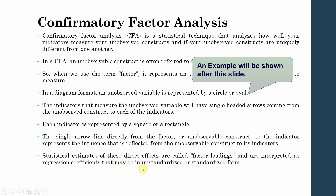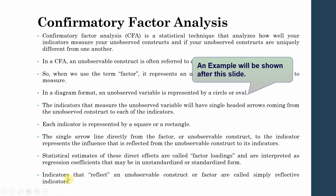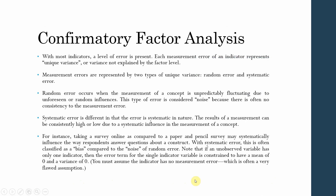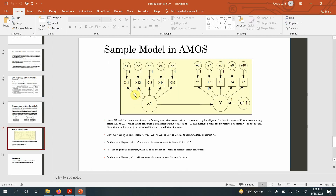Indicators that reflect an unobservable construct or factor are called reflective indicators. In a brief example: the arrows point from your unobservable construct to the indicators, and when we run the model we get statistical figures on these arrows — they show factor loadings, also called regression weights or regression coefficients.